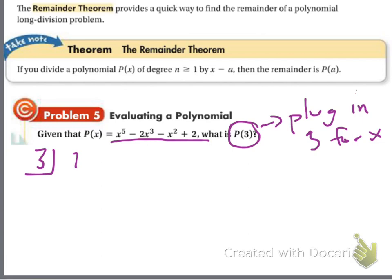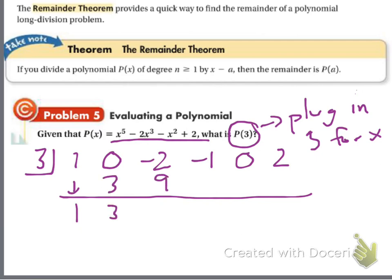1, they skipped x to the 4th, zero, negative 2, negative 1, they skipped x, zero, two. When they skip a variable, you have to put a zero there. Bring the 1 down. 1 times 3 is 3, add. 3 times 3 is 9, add. 7 times 3 is 21, add. 20 times 3, 60, add. 60 times 3, 180, add.